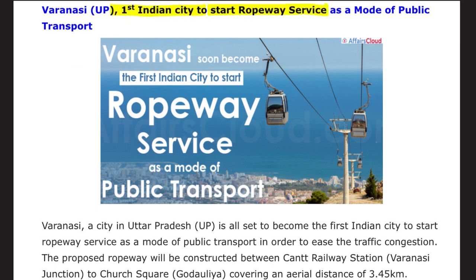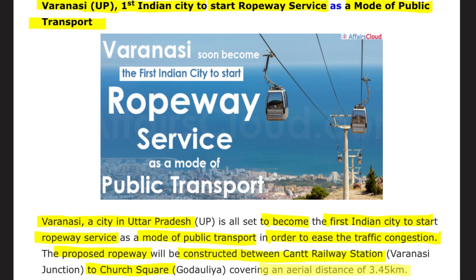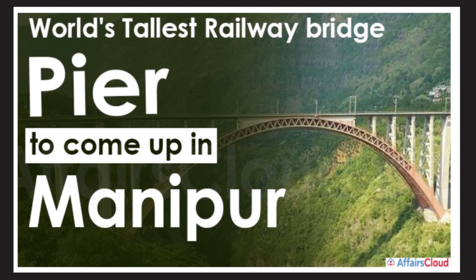Varanasi, a city in Uttar Pradesh, is set to become the first Indian city to start a ropeway service as a mode of public transport, in order to ease traffic congestion. The proposed ropeway will be constructed between Cantt Railway Station to Godowlia Chowk, covering an aerial distance of 3.45 kilometers.